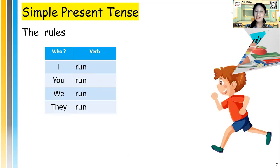So, the rules is like this. If the subject I, you, we, they, we use the verb one, base verb. Like, I run, you run, we run, they run.